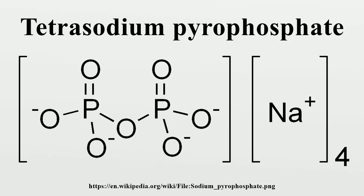Tetrasodium pyrophosphate is produced by the reaction of furnace-grade phosphoric acid with sodium carbonate to form disodium phosphate, which is then heated to 450 degrees Celsius to form tetrasodium pyrophosphate. Alternatively, it can be created by the molecular dehydration of dibasic sodium phosphate at 500 degrees Celsius.